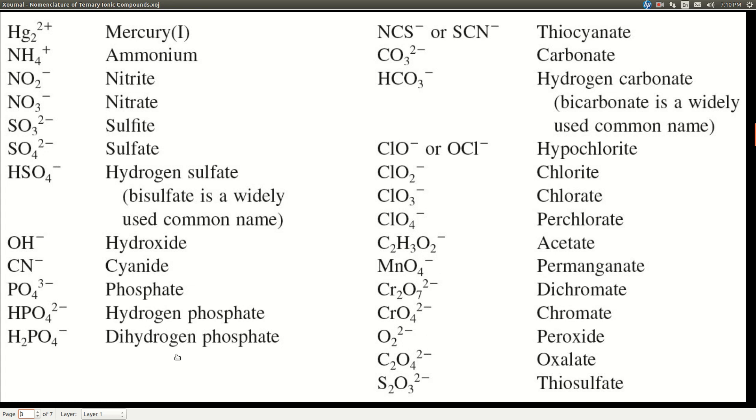And polyatomic, poly means many, so two or more. Atomic means atoms. Ions means they have a charge. So these are different than the compounds we've been naming because these have charges and they're ions. Most of these, you'll notice, are anions.